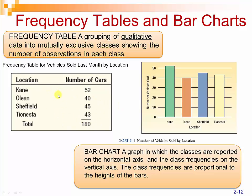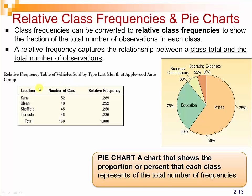We could take these frequencies and convert them into relative class frequencies. What we're doing there is showing the fraction of the total number of observations in each class. So if Cain sold 52 cars, that's 28.9% of the total number of cars, or in decimal format it's .289. Likewise, you can do that for each of the other ones as well. The relative frequency captures the relationship between the class total and the total number of observations.